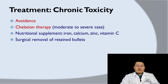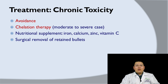For chronic toxicity, the main treatment is avoidance and stopping the exposure. Chelation therapy is used only in cases of moderate to severe toxicity. In cases with iron, calcium, zinc, or vitamin C deficiency, replacing these nutritional supplements will decrease lead absorption through the gut. In cases with retained bullets, surgical removal will stop the exposure.